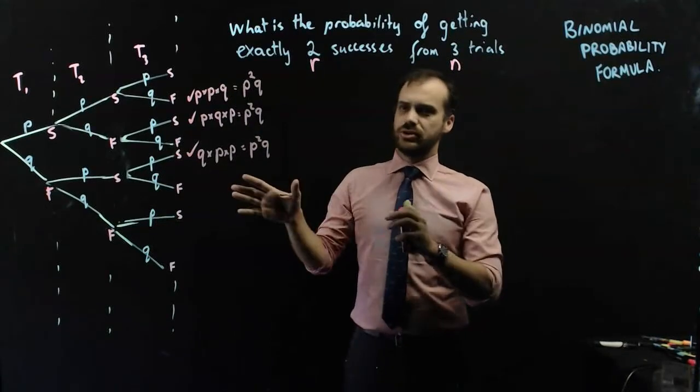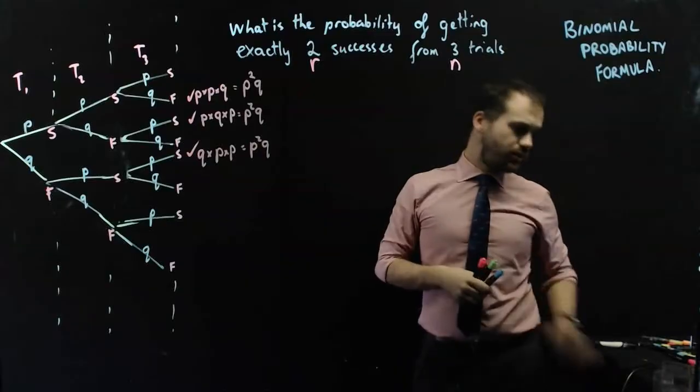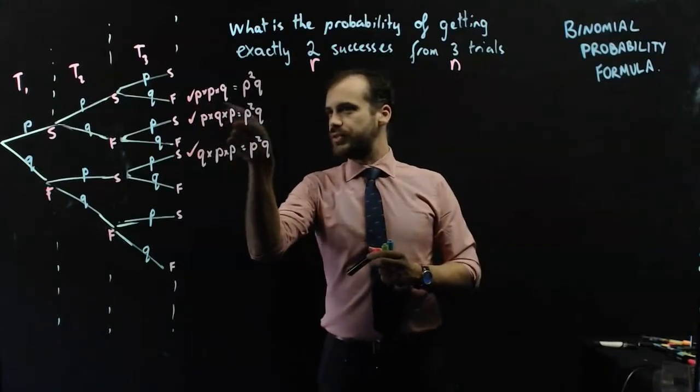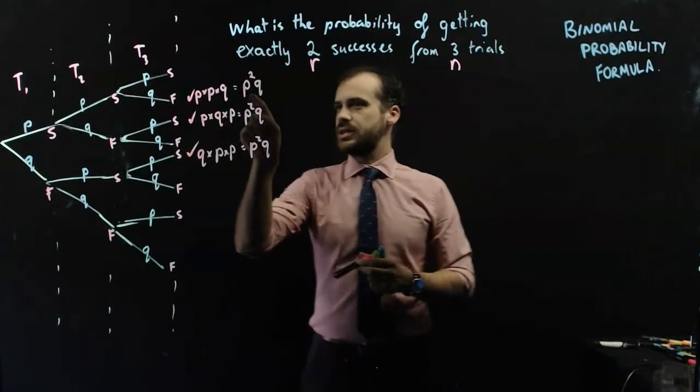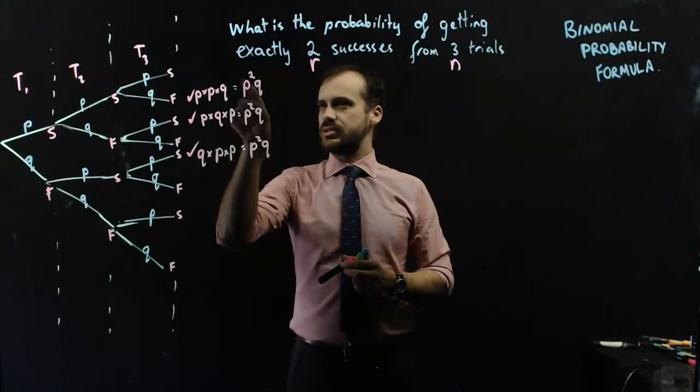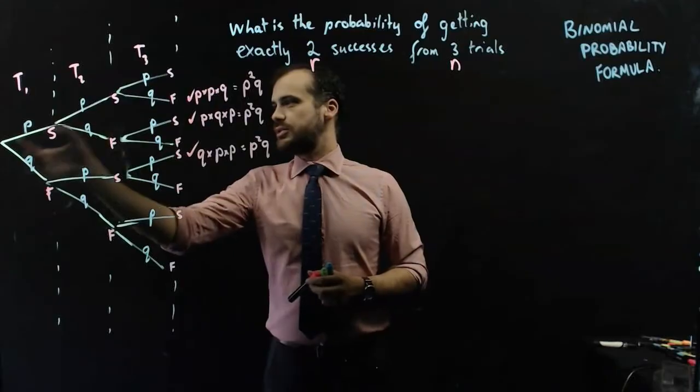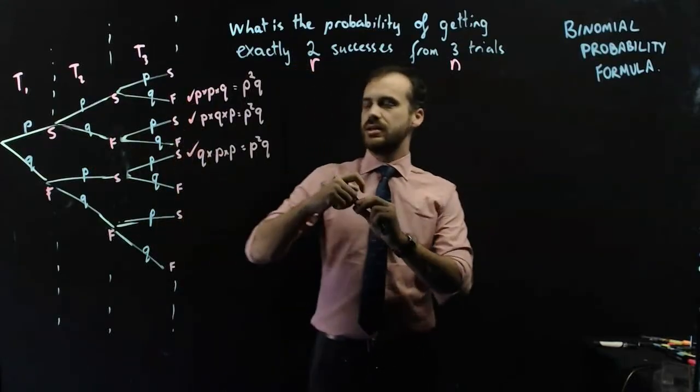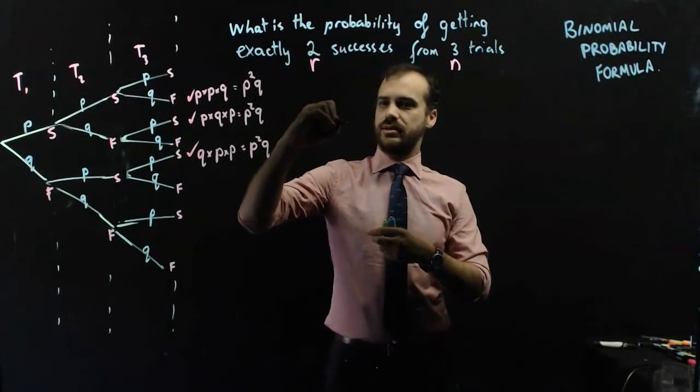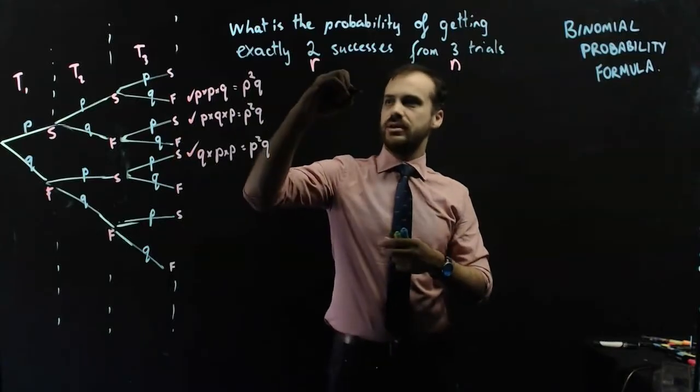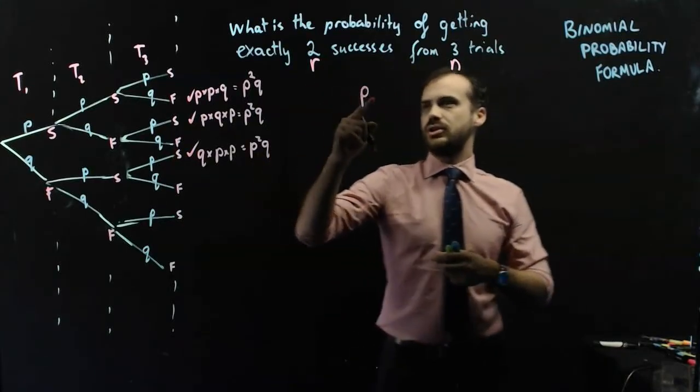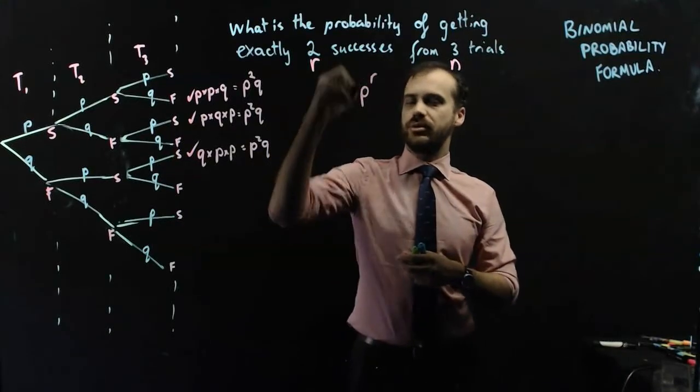Now what's that got to do with anything so far? Well the probability of this happening, you can see, is the probability of success to the power of the number of successes. You can see there's two successes there. So I can write down that. I'm going to write it sort of here. Probability to the power of R. The number of successes.